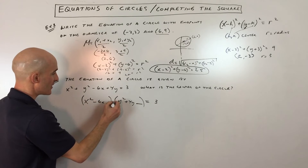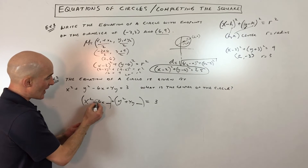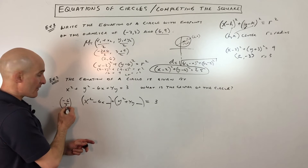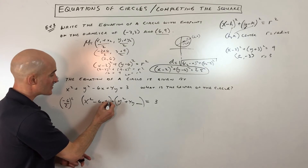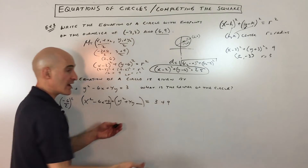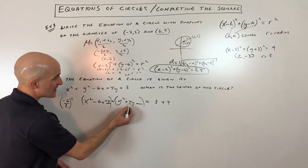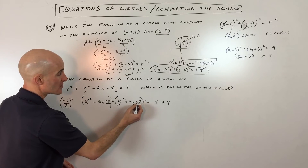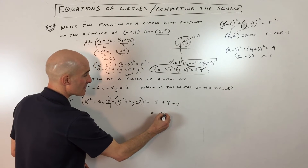To complete the square, take half of the middle coefficient of the x terms: half of negative six is negative three; negative three squared is nine. Add nine to both sides. For the y terms, take half of four, which is two, and square it to get four. Add four to both sides. The right side simplifies to 16.